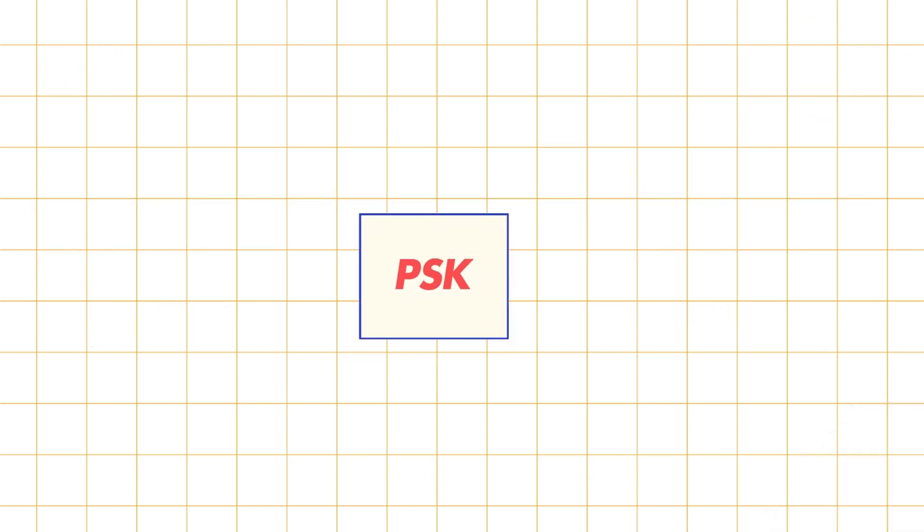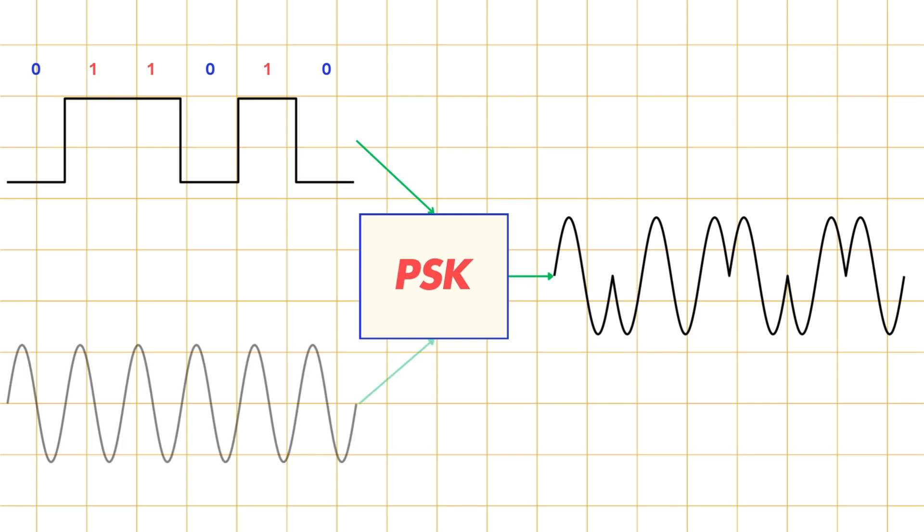Let's start by answering the question, what is PSK? Phase shift keying, or PSK, is a digital modulation technique that transmits data by shifting the phase of a constant frequency carrier wave. Think of it as a way of encoding zeros and ones into changes in the wave's phase.